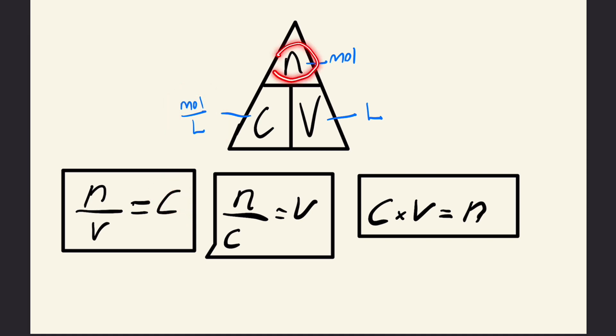If we divide moles on top by concentration on the bottom, we end up with volume in liters, represented by this box. Lastly, multiplying the two terms on the bottom, concentration and volume, gives us moles on top, represented by this box.